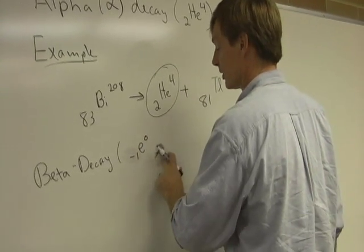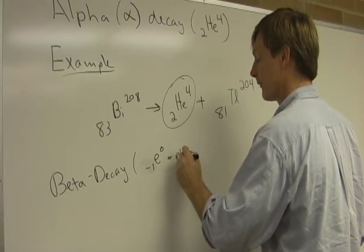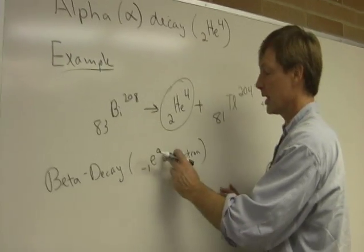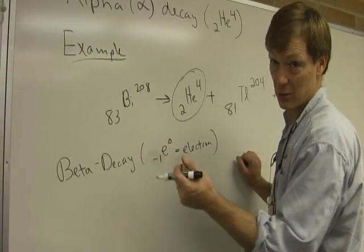But it works in the equation, I should say, equals electron. The atomic number for an electron is minus 1. And the nucleon number is 0. There are no nucleons.